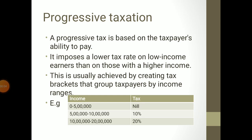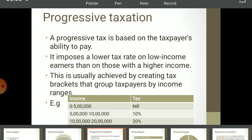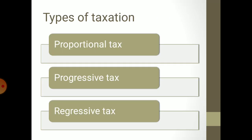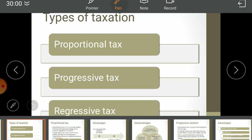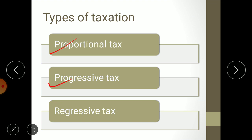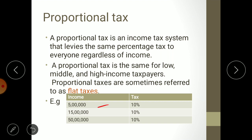Welcome to the virtual classroom of business environment. We are discussing unit three: Indian tax system, specifically types of taxation. We have completed proportional tax, where the same percentage is charged on every income level — whether you earn 5 lakh or 50 lakh, you pay 10%. Irrespective of income, everyone pays the same tax rate.